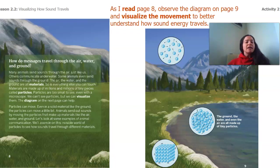Particles can move. Even in a solid material like the ground, particles can move a little bit. Animals send out sounds by moving the particles that make up materials like the air, water and ground. Let's look at some examples of animal communication. We'll zoom in on this invisible world of particles to see how sounds travel through different materials.